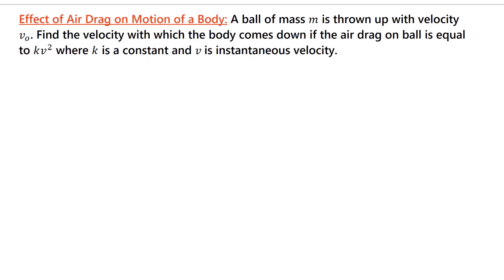Hello friends. In this video I will explain how you can consider the effect of air drag on motion of an object. A ball of mass m is thrown up with velocity v0. Find the velocity with which the ball will come down if the air drag on the ball is equal to kv², where k is a constant and v is the instantaneous velocity.